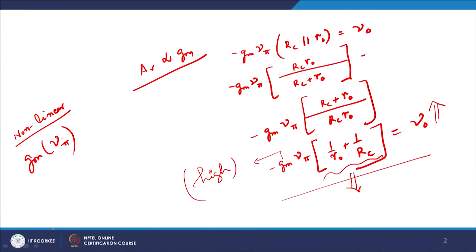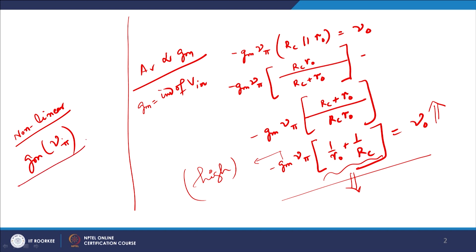If the signal is large, nonlinearity enters the system — GM becomes a function of Vin, specifically Vπ. However, if we sustain a small input voltage, there will be no nonlinearity and a gain totally independent of Vin — a linear gain — will be available. The key takeaways from this analysis: input impedance is Rπ and output impedance is RC in parallel with R0.